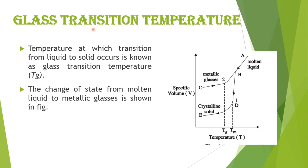During the solidification process there is essentially no change in spatial atomic configuration, thus a glass may be considered as a solid frozen in a liquid structure. The temperature at which transition from liquid to solid occurs is known as the glass transition temperature.